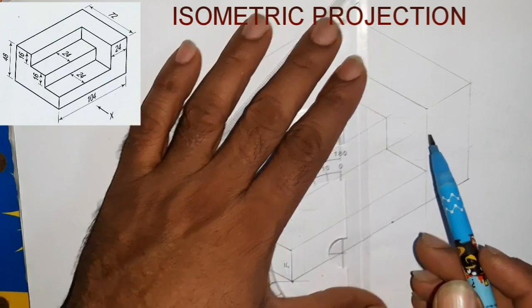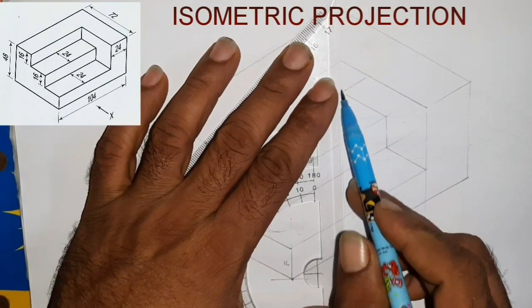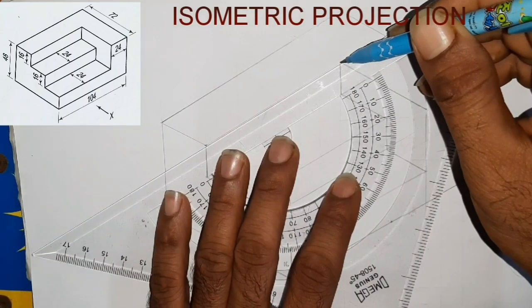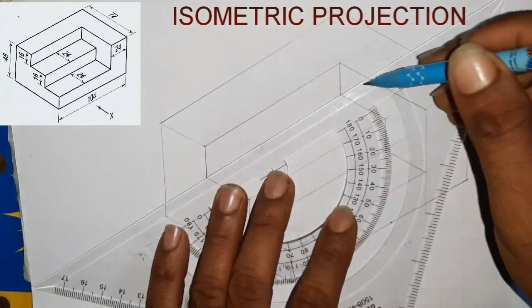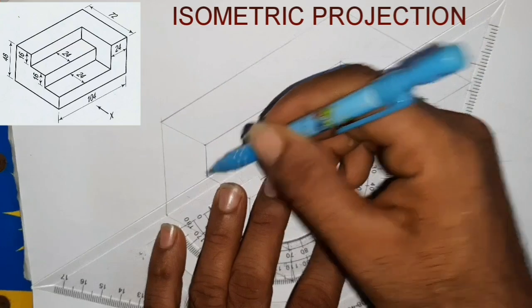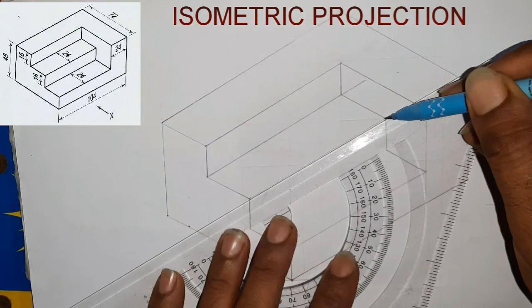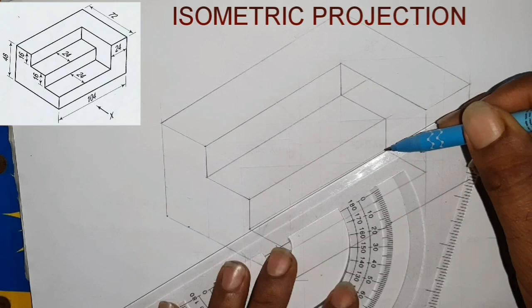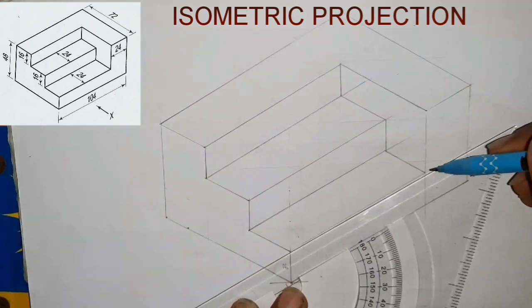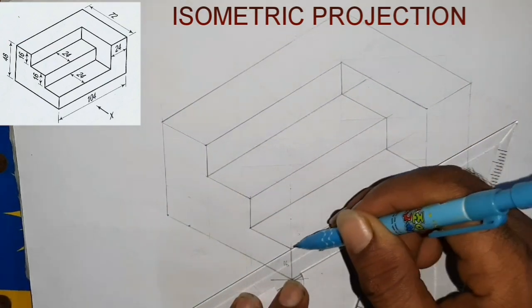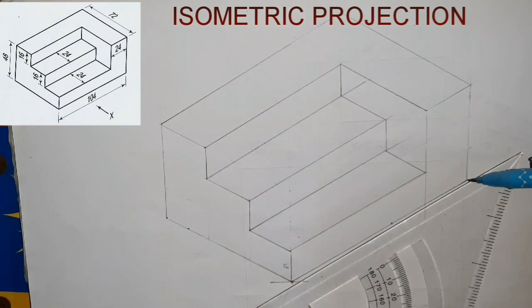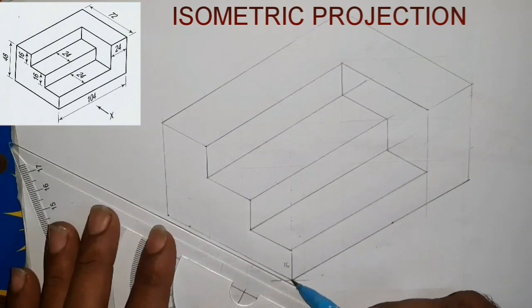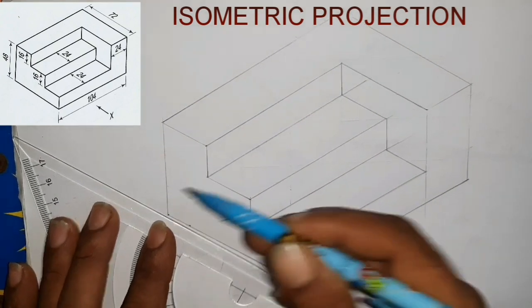We will complete the object. To draw the object, we will do the construction lines first, then save, and then erase them.